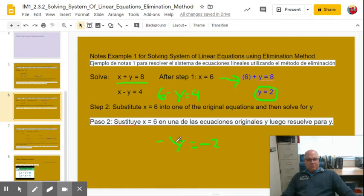Then you would subtract 6 from both sides and you would have had negative y equals negative 2. Then you would have divided both sides by negative 1 or you could have said you multiply both sides by negative 1. Either way, we get y equals 2.